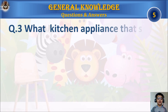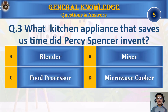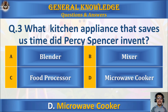Question 3: What kitchen appliance that saves us time did Percy Spencer invent? A) Blender, B) Mixer, C) Food processor, or D) Microwave cooker? Your time starts. The answer is D) Microwave cooker.